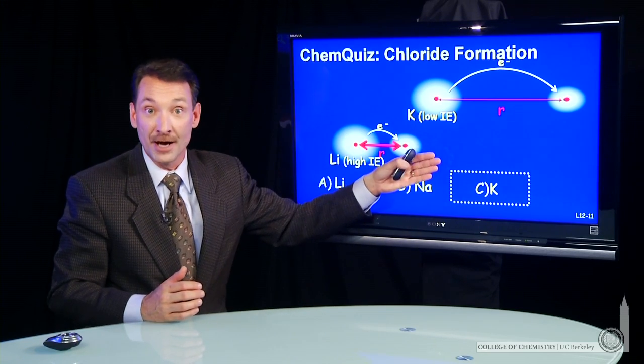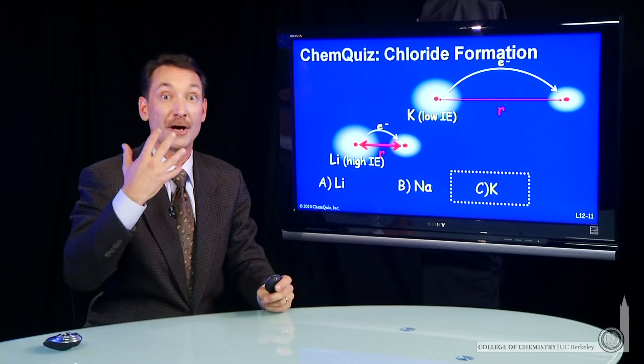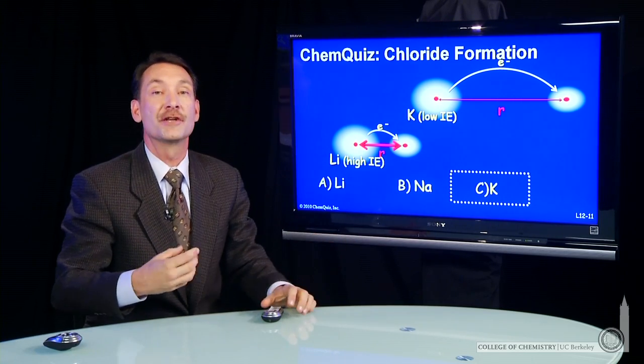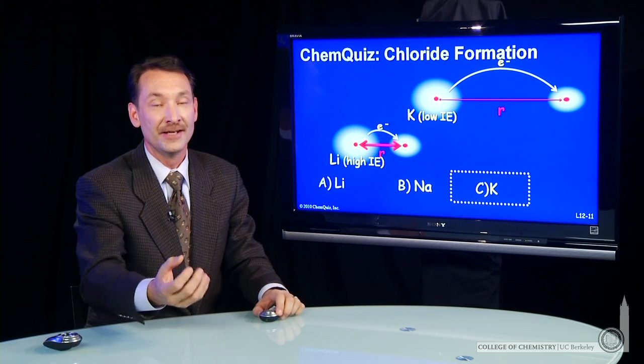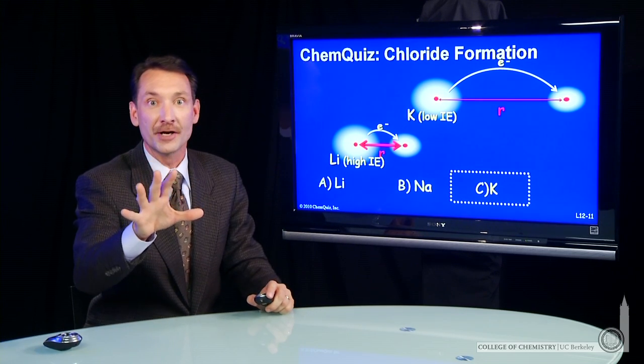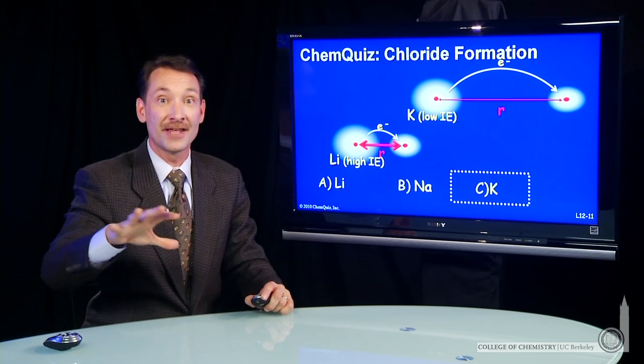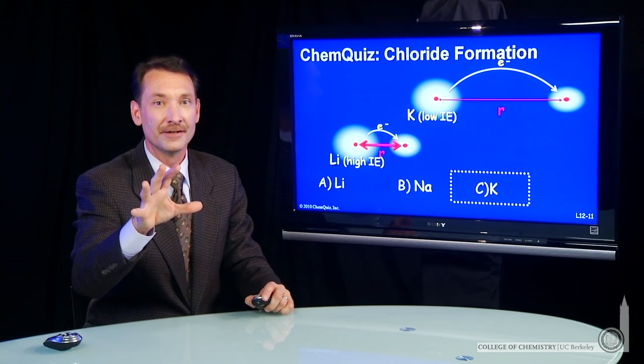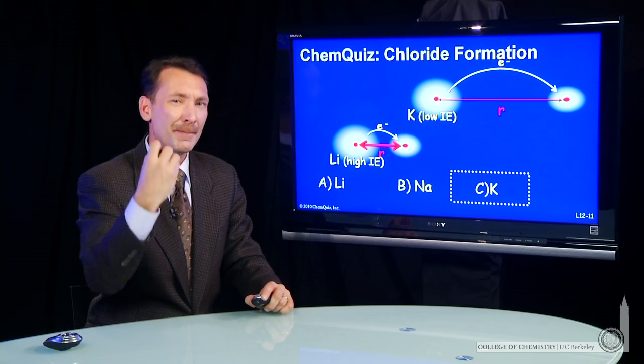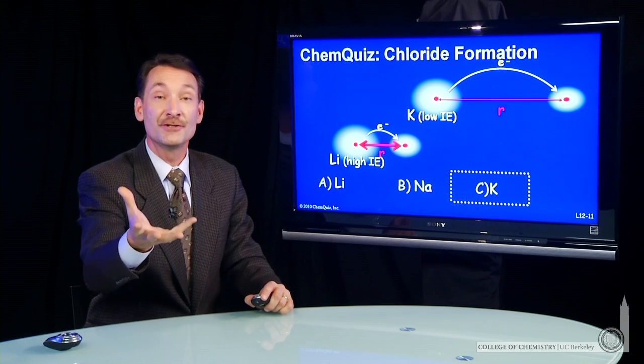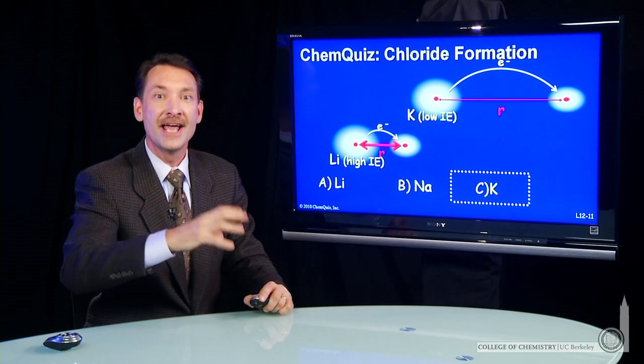Now, there's a lot going on in this chem quiz. We had to talk about ionization. We had to talk about coulombic interaction. We had to talk about ionization energies. If you didn't get everything here, don't worry about that. We'll have chem quizzes like this, where we bring everything together. And it might be really tough. The point is, stop and think about it. Talk about it with your friends. If you get it, great. If you don't, listen to the explanation again, and see if you can.